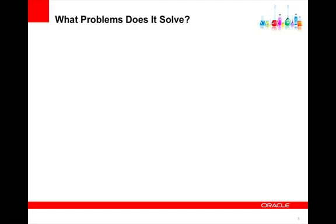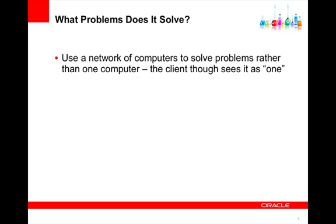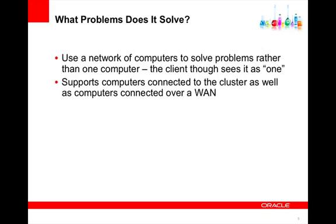What problems does it solve? It basically solves the problem of allowing a client to submit work and not care where it gets executed. The network of computers managed by the processing pattern will look as if it were one big computer, and the client sees this network of computers as one computer. It supports computers connected to the Coherence grid, which is the Coherence cluster, as well as computers connected over Coherence Extend, and those computers could possibly be connected over a wide area network.